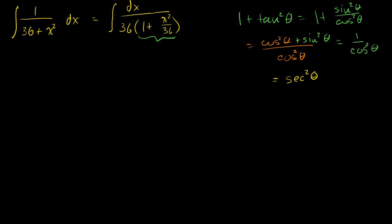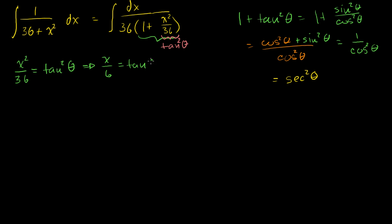So if we make the substitution — let's make x squared over 36 equal to tangent squared of theta. Then this expression will be 1 plus tangent squared of theta, which equals secant squared. Taking the square root of both sides, x over 6 equals tangent of theta, or x equals 6 tangent of theta.